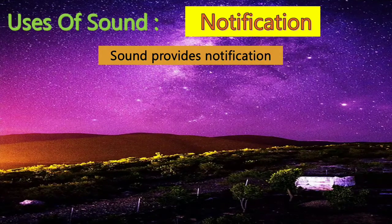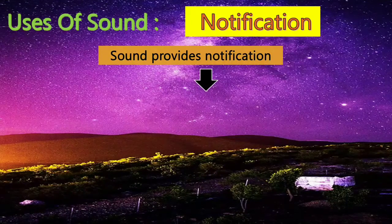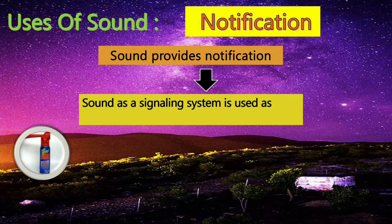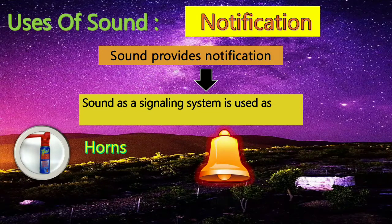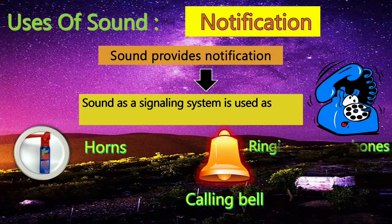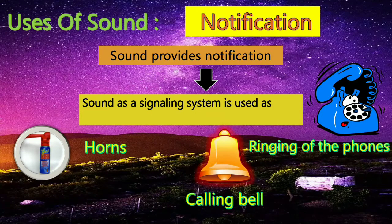Sound provides notification. Sound as a signaling system is used as a notification — for example, a handbell or calling bell, and the ringing of phones. These sounds trigger us and get our attention.